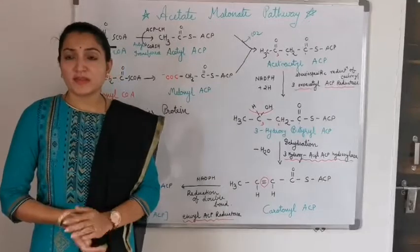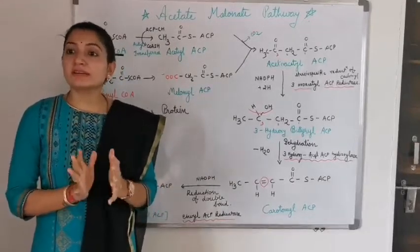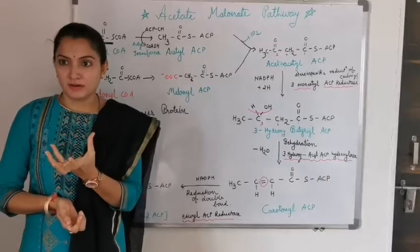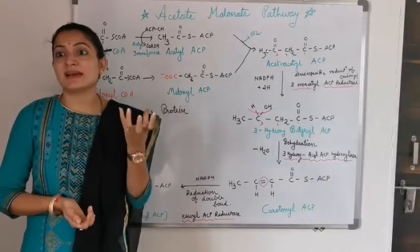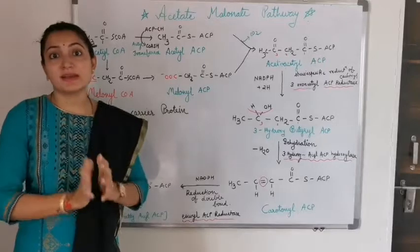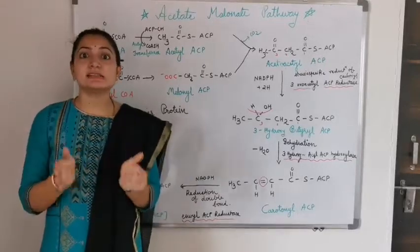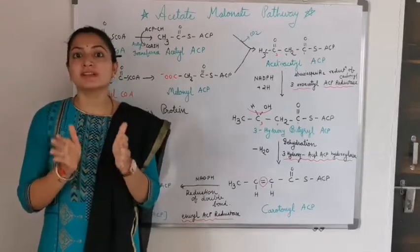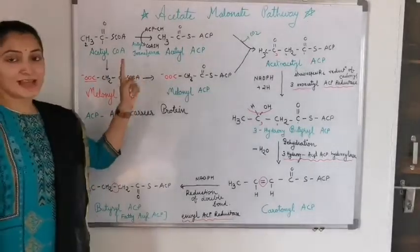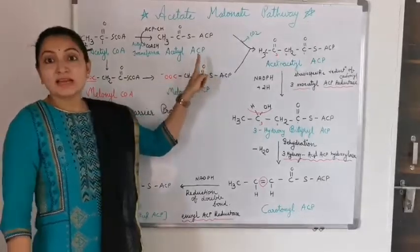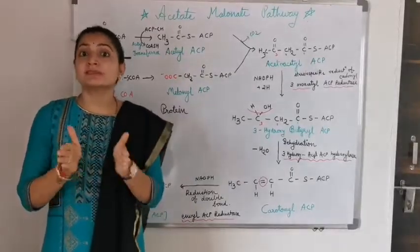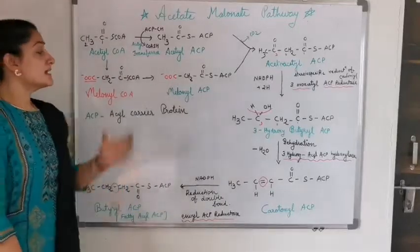In the acetate-malonate pathway, acetyl coenzyme A is the starting material, which is why the name 'acetate' is given. Acetyl coenzyme A is formed from acetic acid bound with coenzyme A, and it is an intermediate formed during glycolysis. In the presence of acetyl transferase enzyme, acetyl coenzyme A is converted into acetyl ACP, where ACP is the acyl carrier protein — a carrier protein important for the synthesis of fatty acids.